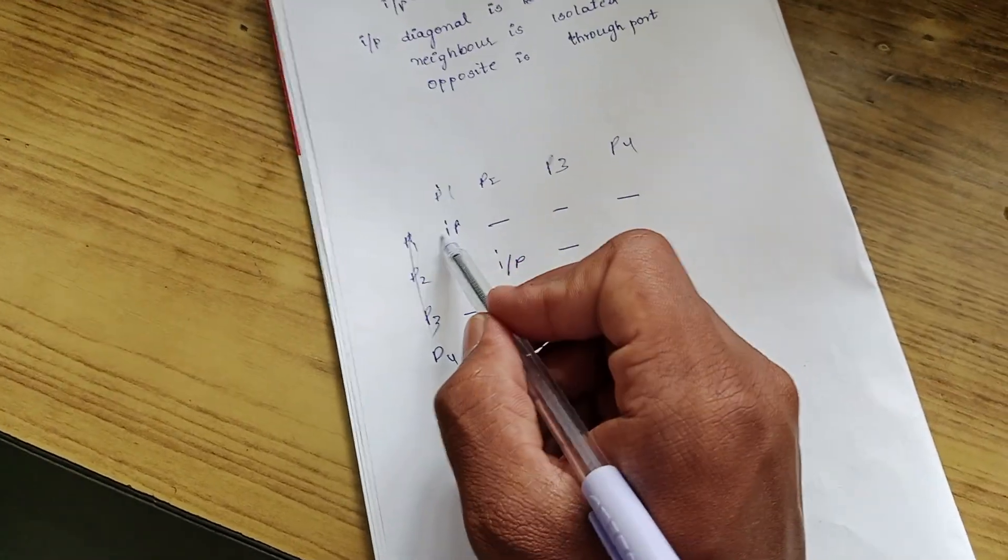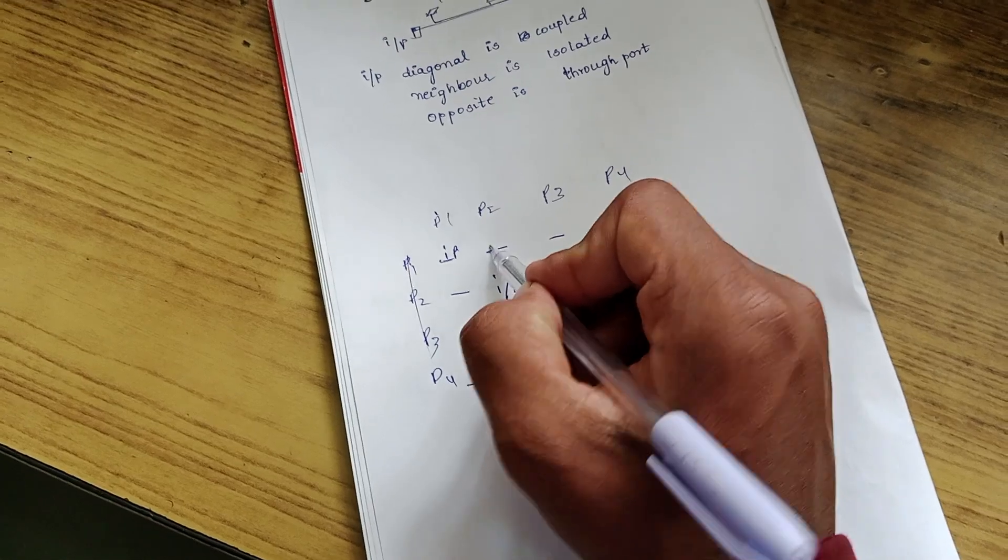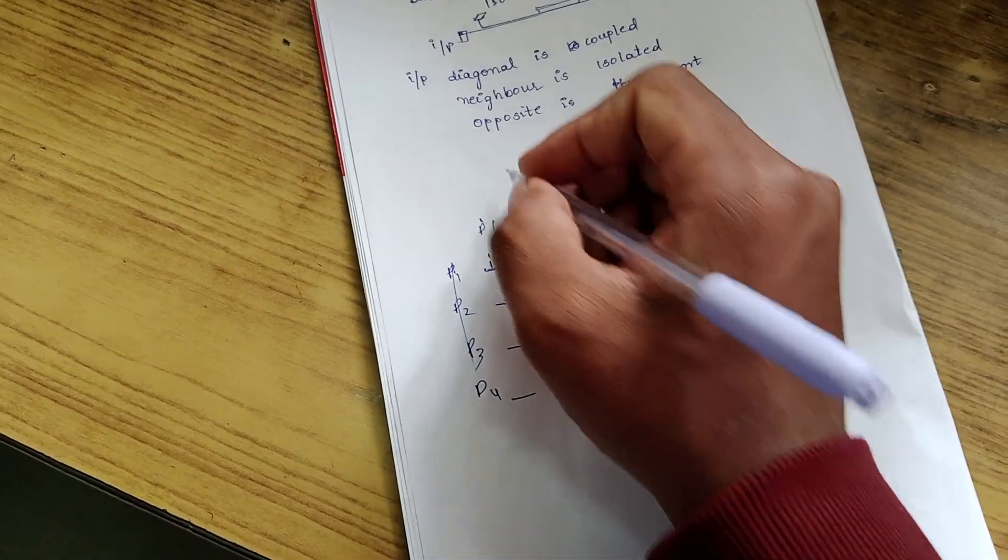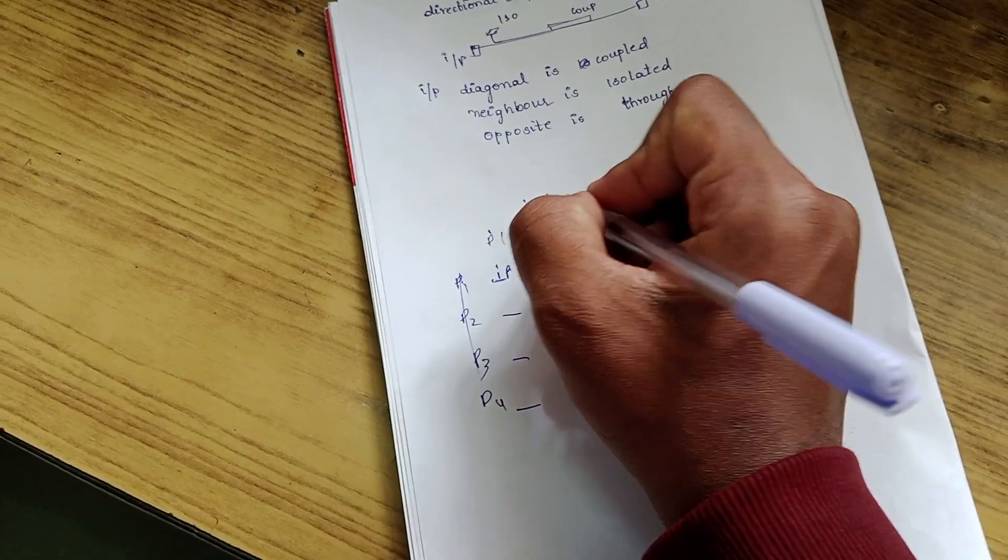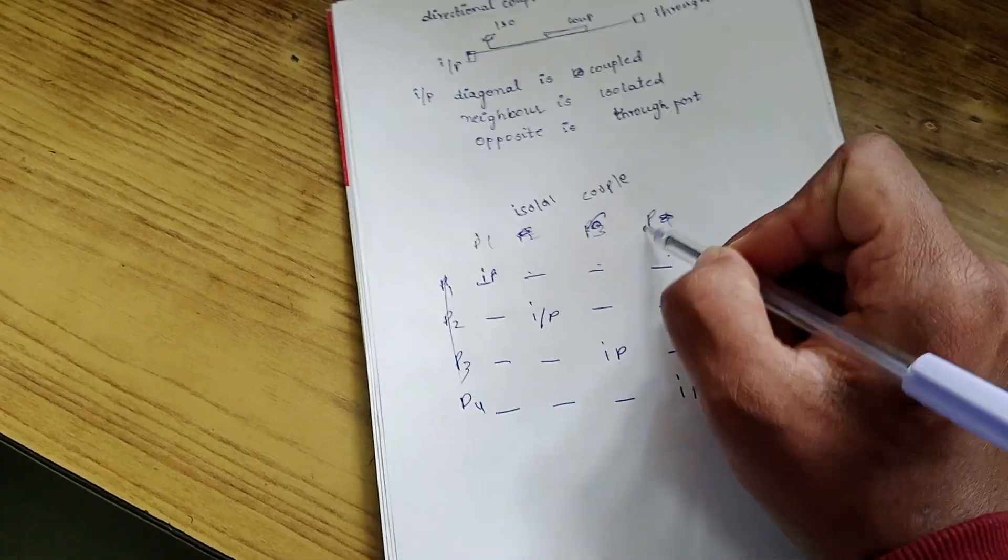If port 1 is input, what current you are getting in port 2, port 3, port 4. Or you can keep this as instead of port 2, port 3, port 4, you can keep this as isolated, coupled and throughput.